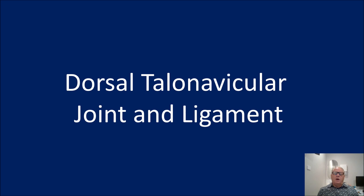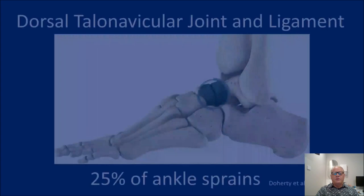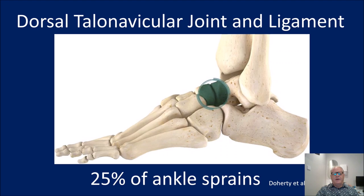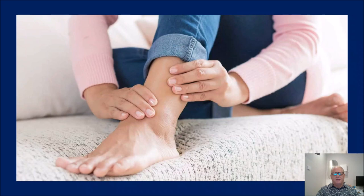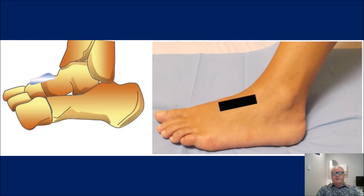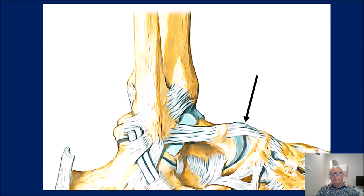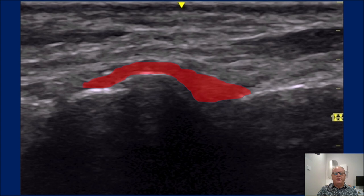Dorsal talonavicular joint and ligament — this is becoming increasingly fascinating. People will come along and point to the front of their ankle saying 'that's where I've got the pain.' About 25% of all ankle sprains I scan have an issue in this region. This is the probe position for the dorsal talonavicular ligament — and this is what it looks like, a normal dorsal talonavicular ligament.